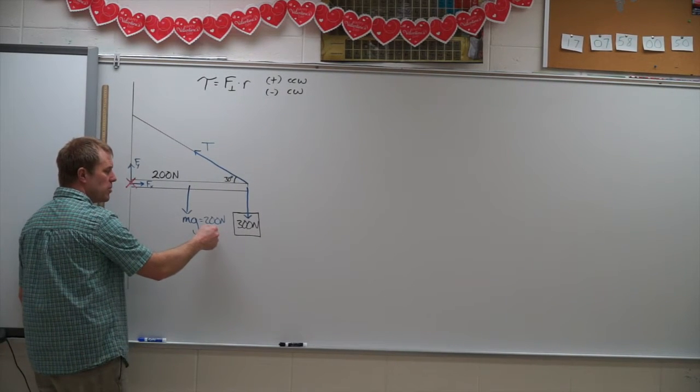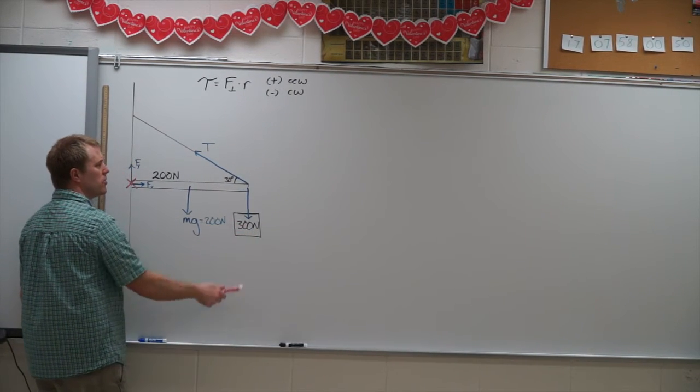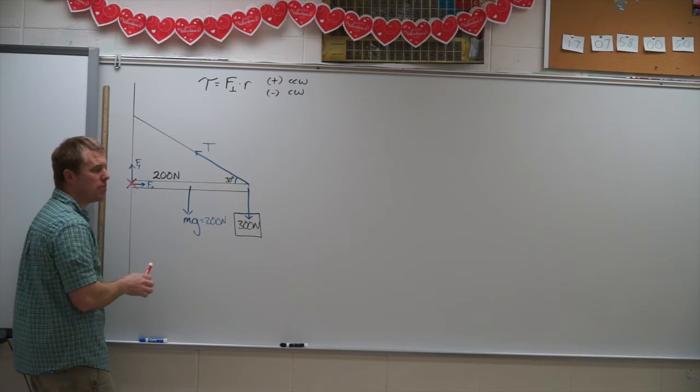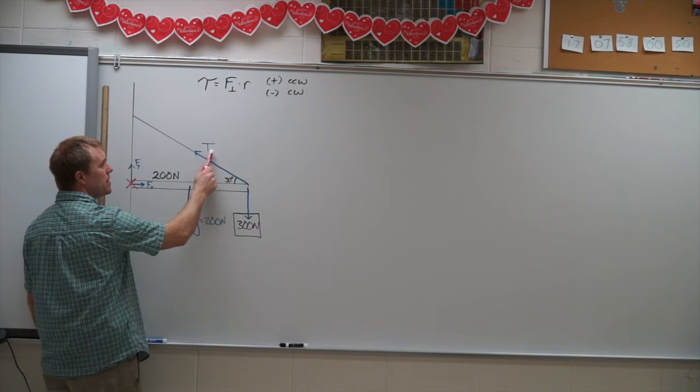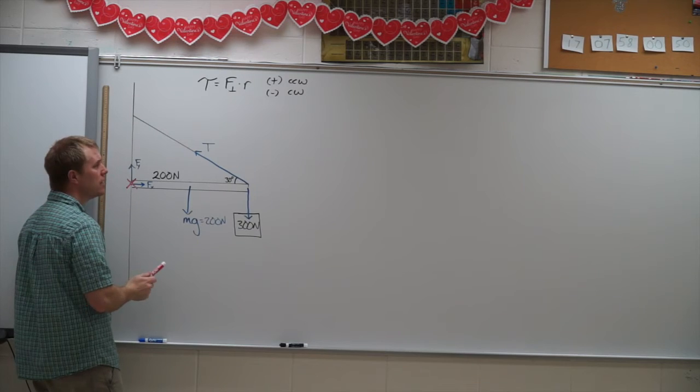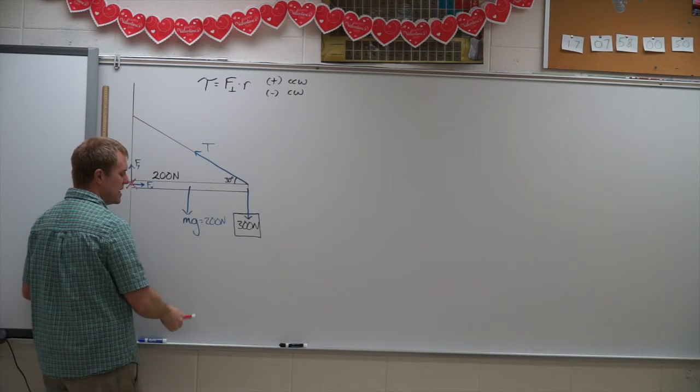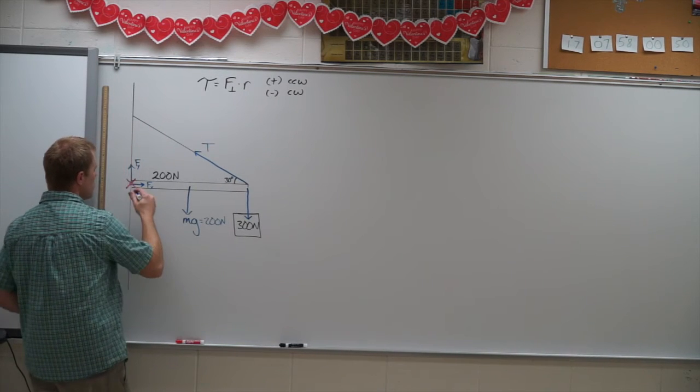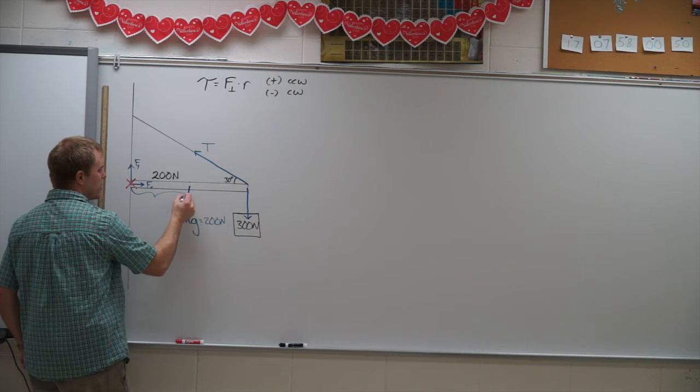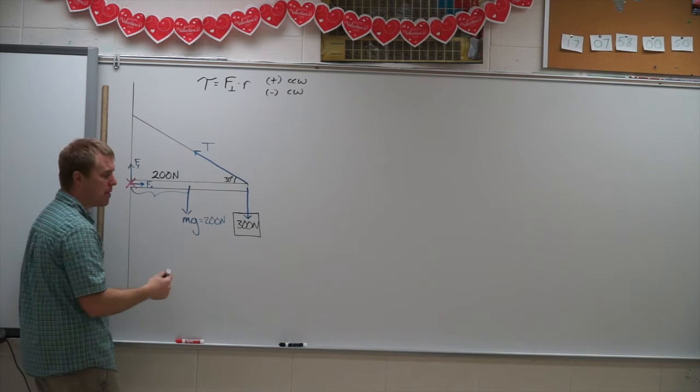The 200 Newtons is producing torque. The 300 Newtons is producing torque. Tension is also, but I have to be careful because I want to find the perpendicular component of that tension. The other thing we need to include in our free body diagram is not only do I need force, I also need distance.